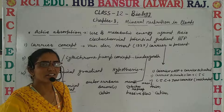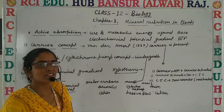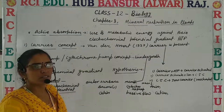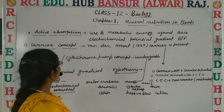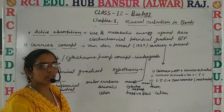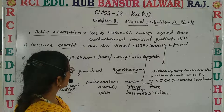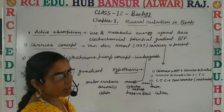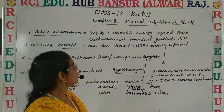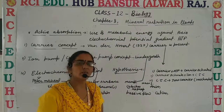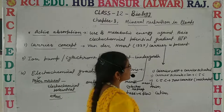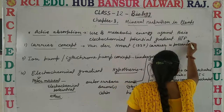Before that, we discussed about the passive absorption of ions. Now let's discuss the last topic of chapter number 8: Active Absorption. Active Absorption utilizes metabolic energy against the concentration of electrochemical potential gradient. In this, the energy is utilized in the form of ATP.